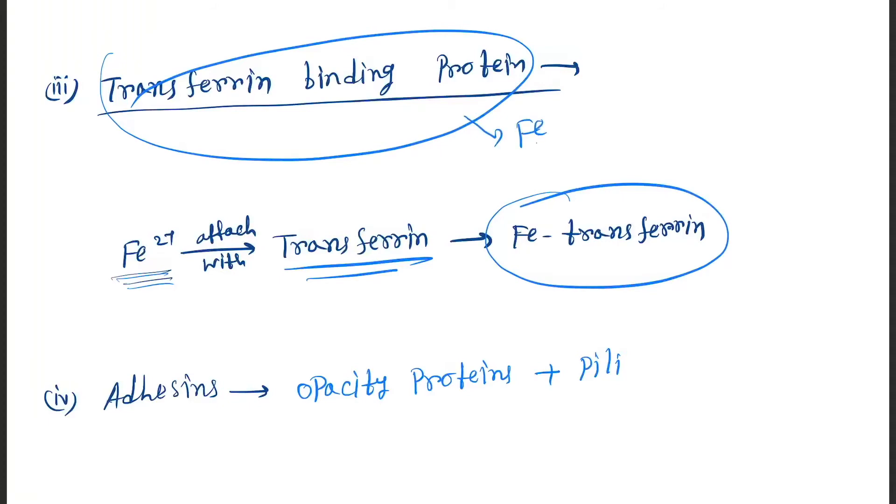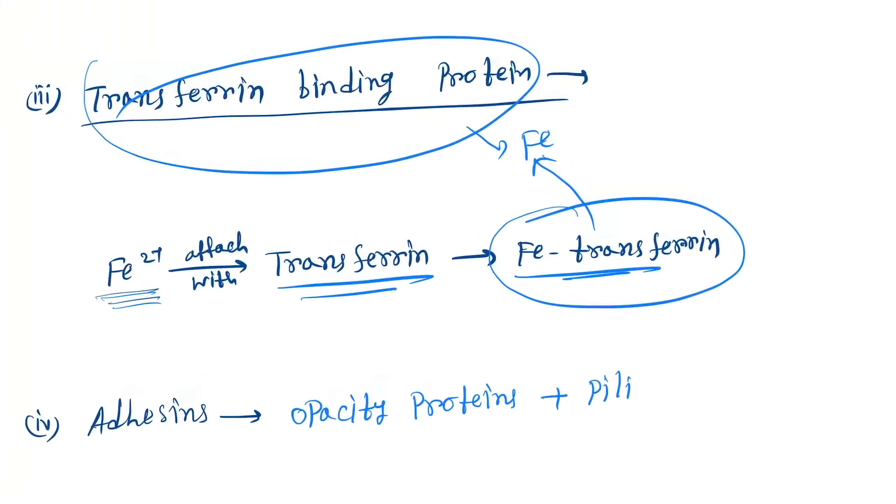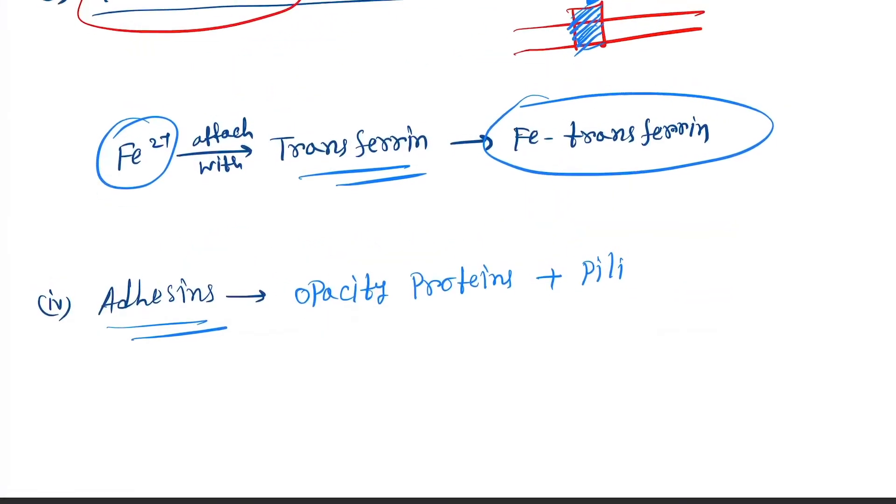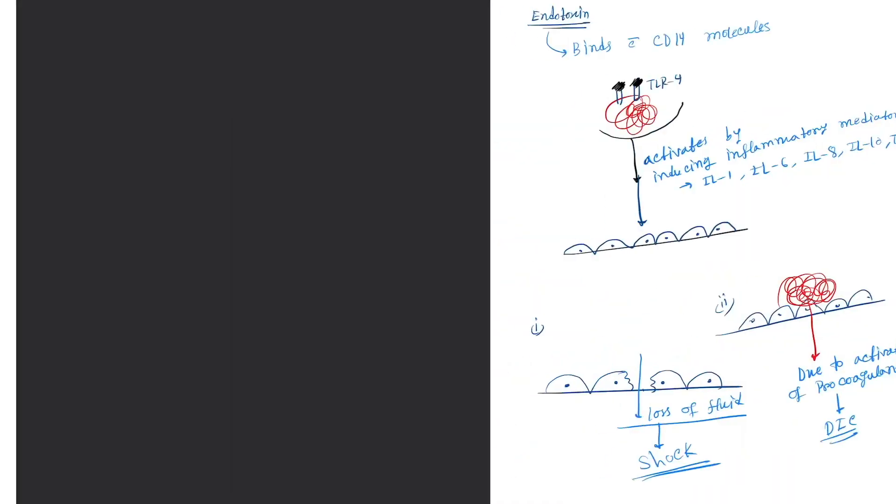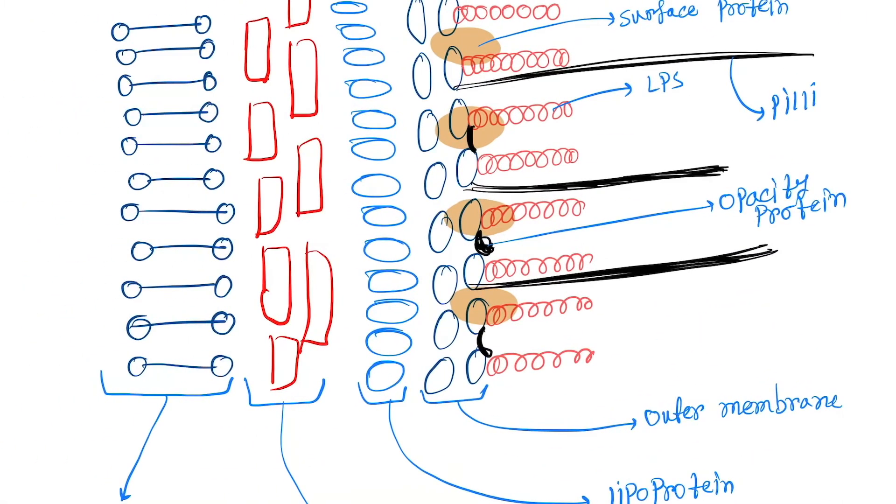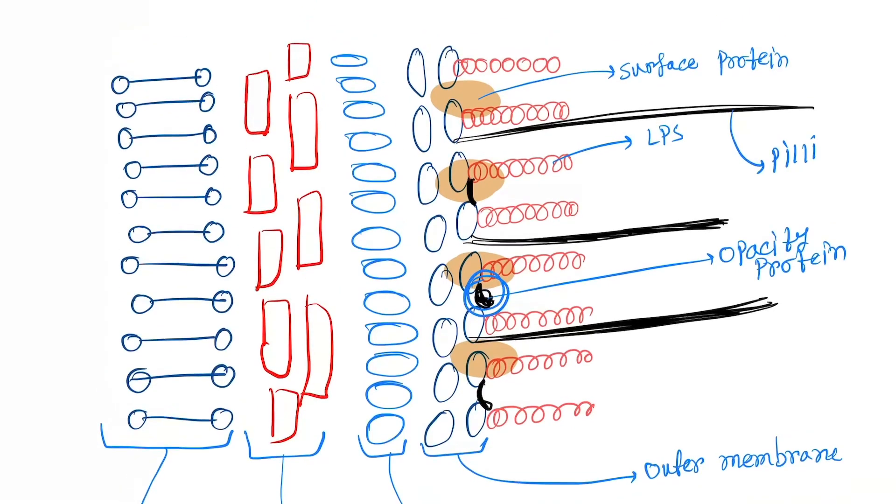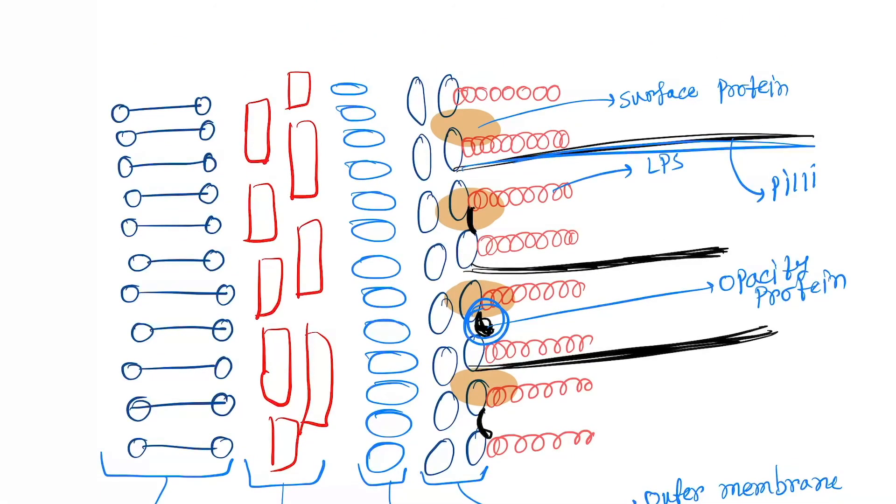The transferrin binding protein separates Fe from transferrin. So from Fe-transferrin, only Fe is now separated. This is the mechanism of transferrin binding. They will adhere to the surface. Opacity proteins: here you can see the opacity proteins and these are the pili.